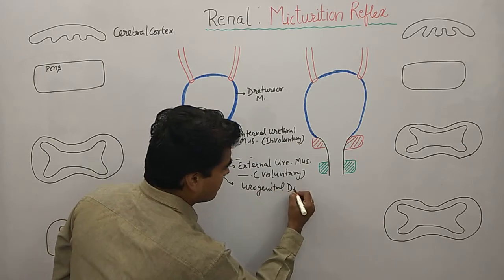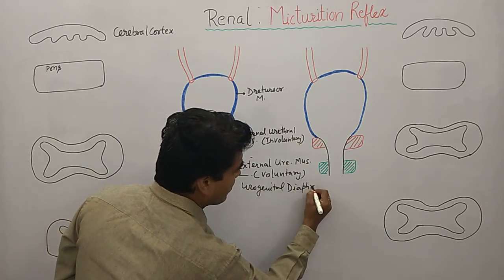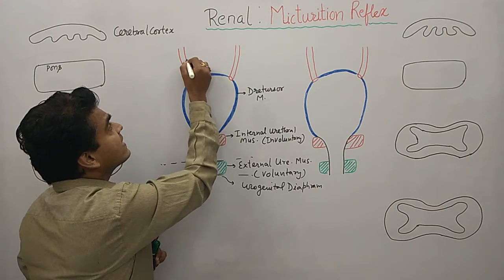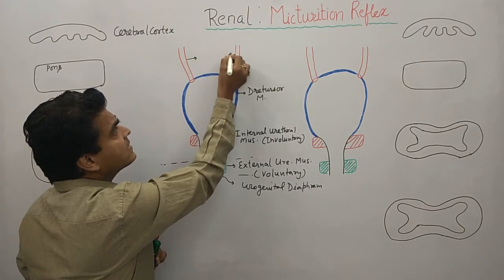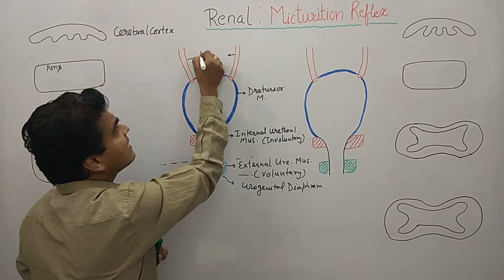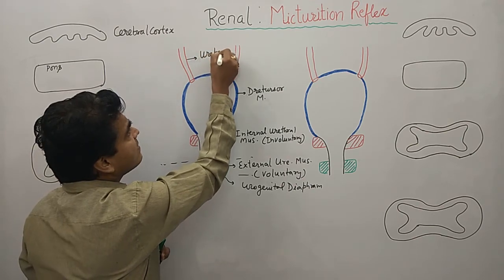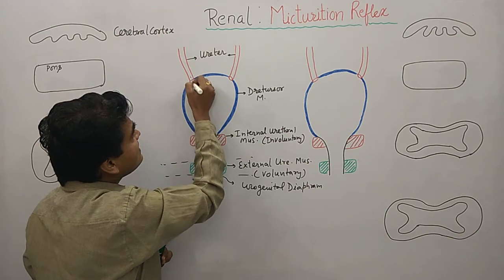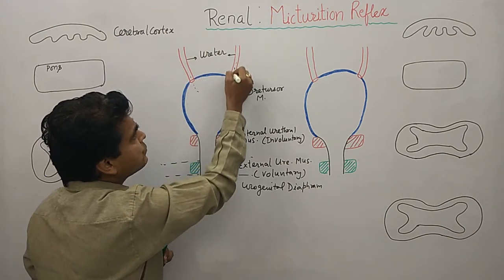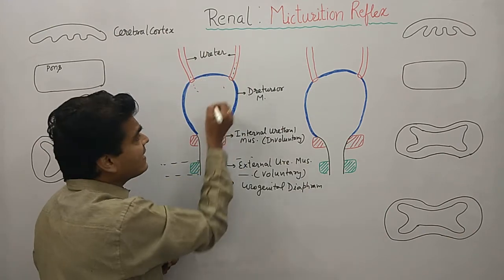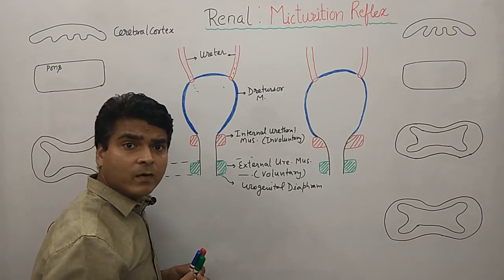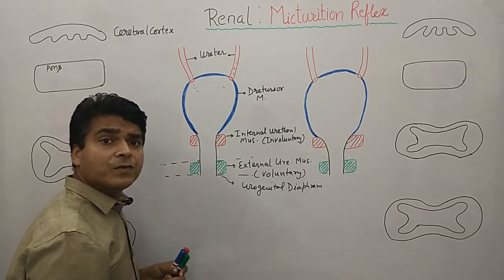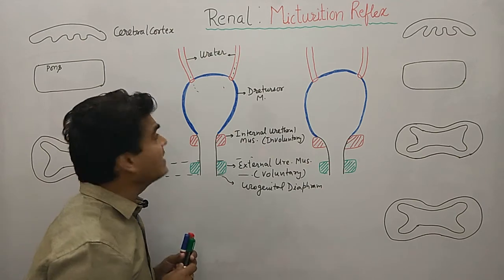The external urethra part is basically a part of the urogenital diaphragm. These vessels are basically connected with the urethra, and from these ureters there is drop by drop urine collecting in the urinary bladder. This is the structure of the urinary bladder.